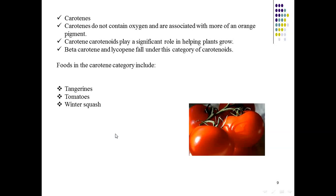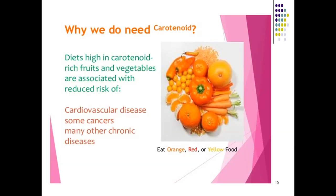Carotenes are orange photosynthetic pigments found in plants that play an important role in photosynthesis. They transmit light energy absorbed from chlorophyll and have a significant role in helping plants grow. Examples of carotenes include beta-carotene and lycopene, which fall under the carotenoid category.